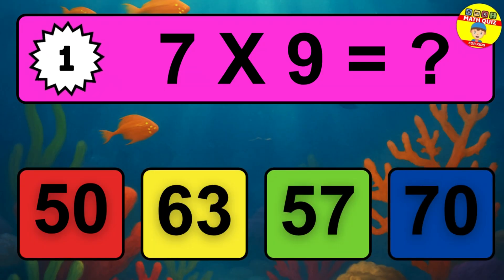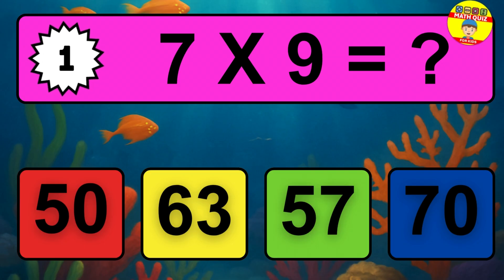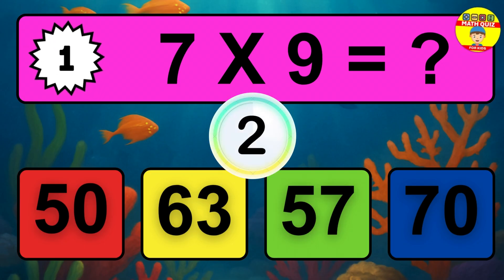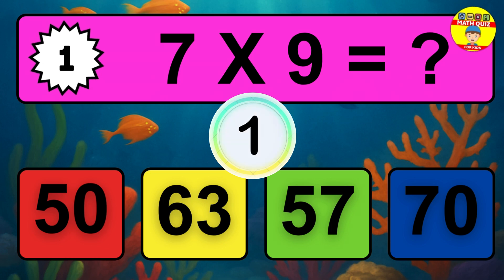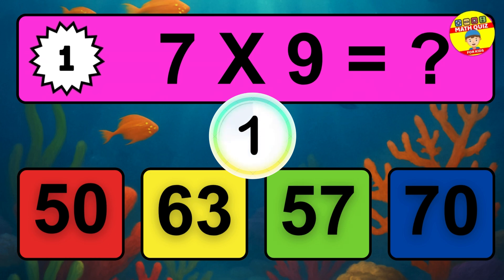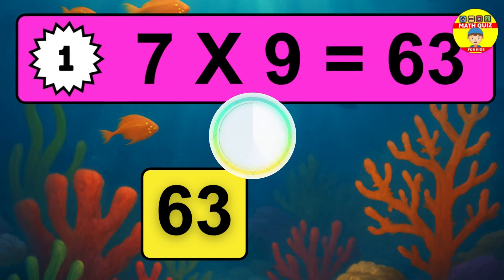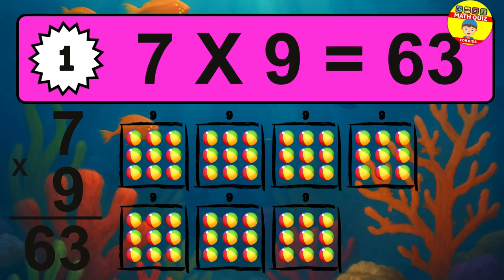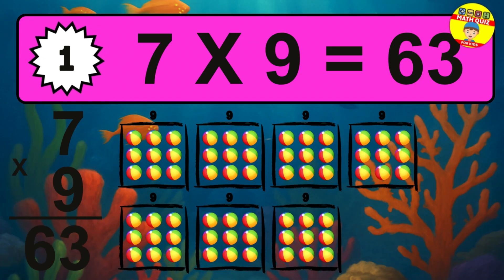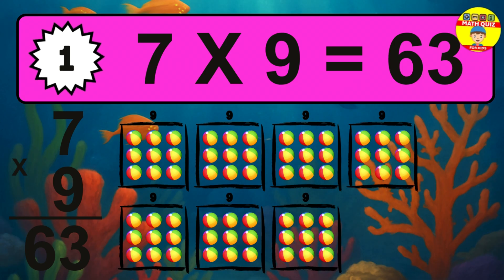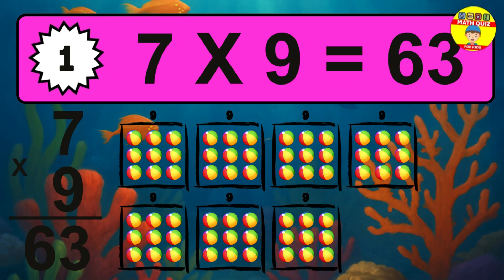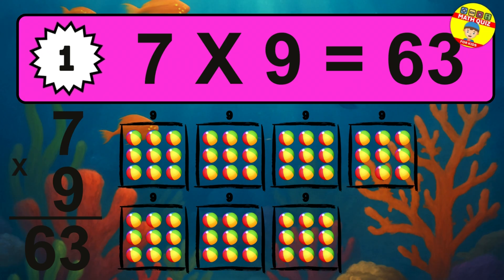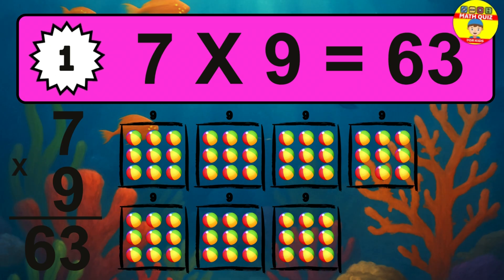Question 1. 7 times 9 equals what? The answer is 7 times 9 is 63. To calculate, we have 7 groups with 9 balls each one. So, how many balls do we have? 63 balls.